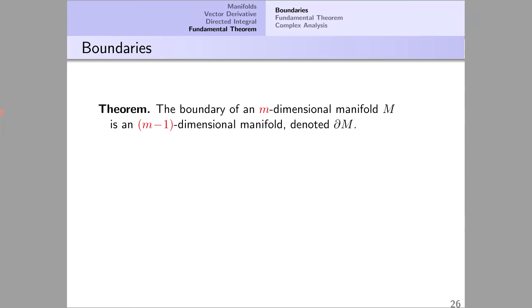And here are the examples. First the M equals 3 case. I have a solid ball, a three-dimensional manifold M, and its boundary is its surface, a sphere, which is a two-dimensional manifold.